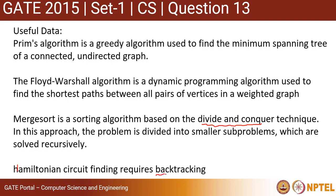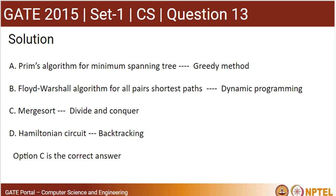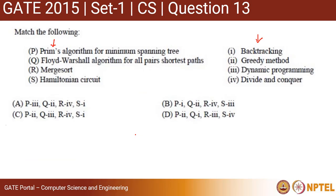Hamilton circuit uses a backtracking algorithm. So matching them: Prim's algorithm is greedy method, Floyd-Warshall uses dynamic programming, Merge Sort is divide and conquer, and Hamilton circuit is backtracking. Looking at the options, option C is the correct answer. Thank you for watching.